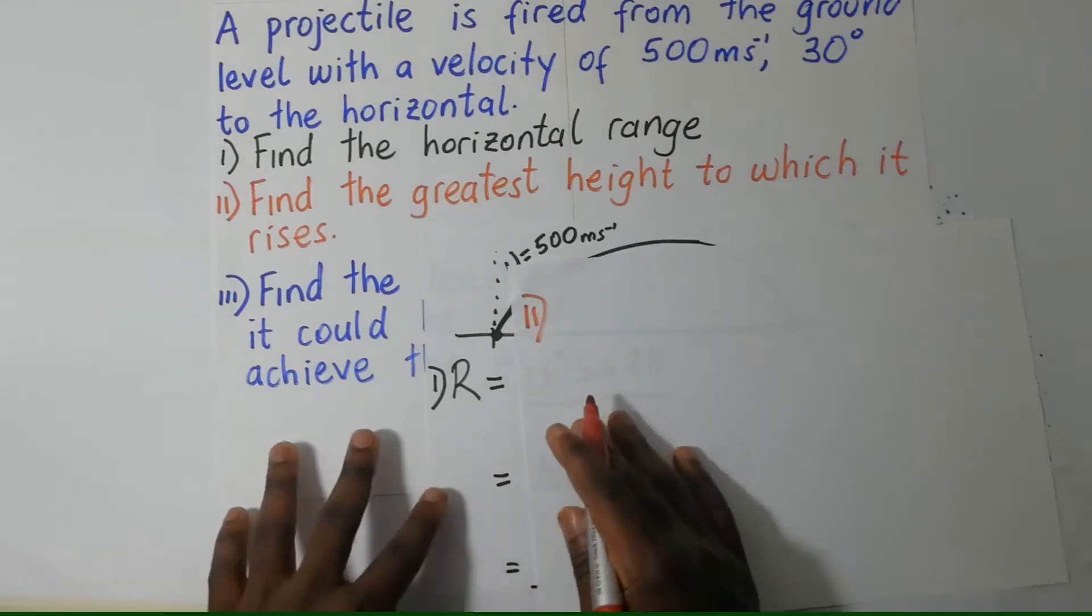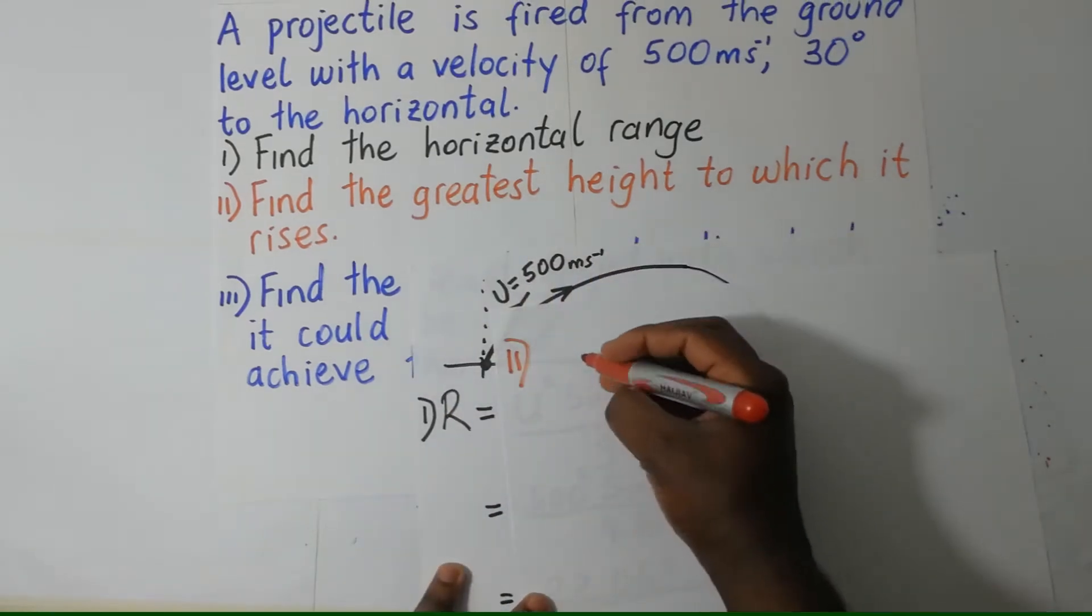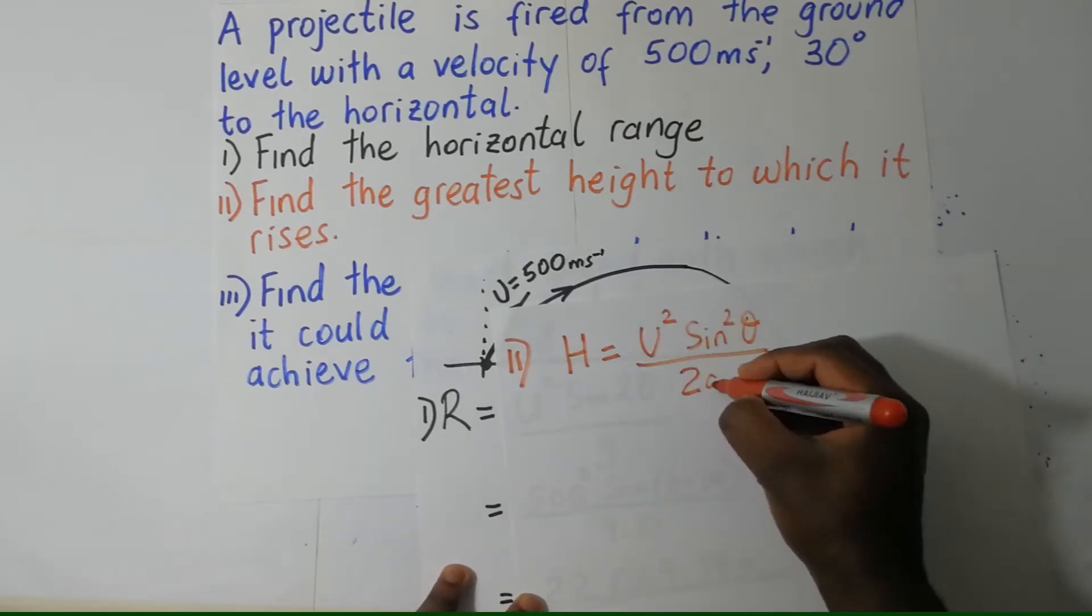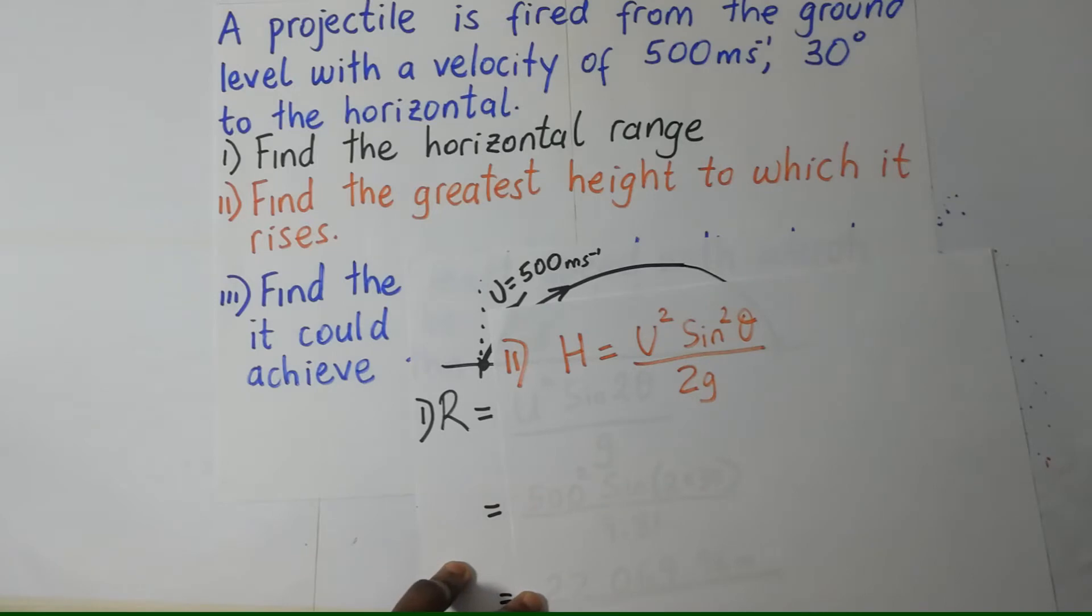We derive the formula for this. Formula for greatest height, which is capital H, is given by, that's the formula for the greatest height reached. We derived this formula in our previous sessions.